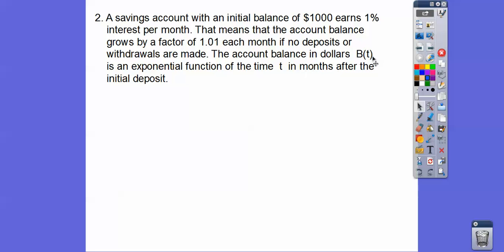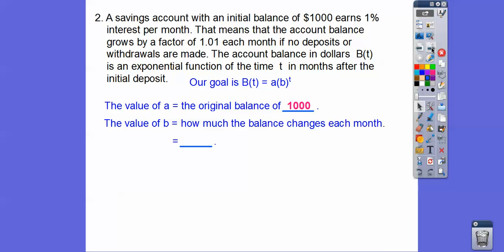So the account balance in dollars is B of T. I don't know why they chose that right there. So it's an exponential function of the time T, so T is our exponent in months after the initial deposit. So here's our goal: B of T equals A times B to the T. So the value of A is the original balance, so the very first deposit was $1,000. And then the value of B is that thing that, how much it increases. It increases by this 1.01 right here.